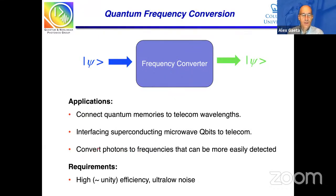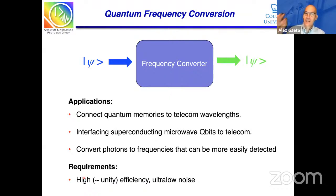All these processes rely on two key requirements. One is you want to operate as close as possible to unity efficiency — pushing a nonlinear process to the limits where theory says you can get perfect efficiency is not easy. The second part is it cannot add any noise. You want this to operate in a regime of ultra-low noise with no additional photons added, as any of those will destroy the fidelity of the conversion process.